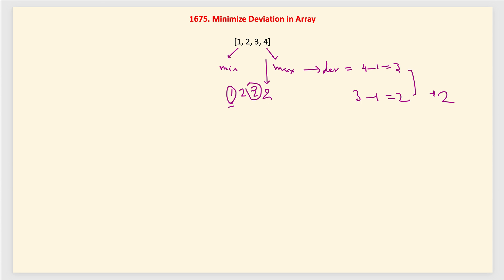Now 1 is odd, so we can multiply it by 2, making it 2. Our array becomes [2, 3, 2, 2]. The minimum value is now 2 and the maximum is 3, so the deviation is 1. Overall, the minimum deviation is 1 for this example.